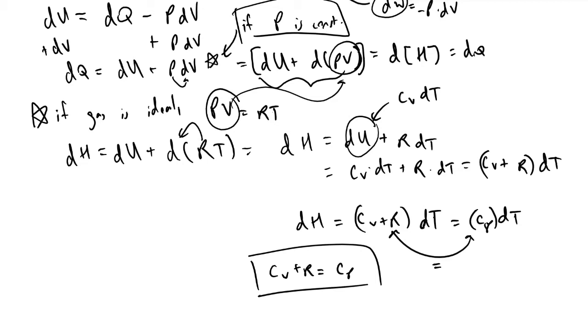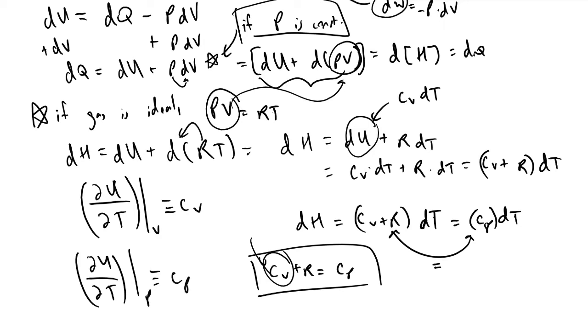And also to build on the definitions and elaborate slightly here, this cv term, by definition, is the change in internal energy of your system with respect to temperature when we hold volume constant. This is defined to be cv. And the same can be said of the change of enthalpy with respect to temperature at constant pressure. This is equal to and defined to be cp. And so, this is going to wrap things up for the key thermodynamic derivations.